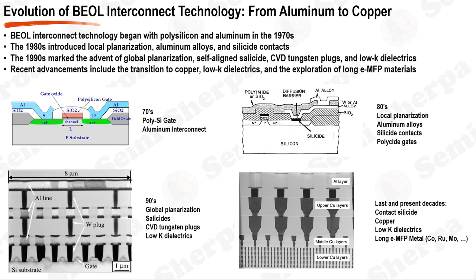Copper has lower resistivity than aluminum, allowing faster signal propagation and lower power consumption. Low-K dielectrics further reduce capacitive coupling, improving performance. As we venture into the future and grapple with challenges at 10 nanometers and beyond, escalating resistance in copper interconnects due to electron scattering becomes a significant hurdle. New materials such as molybdenum, ruthenium, and cobalt have been adopted as alternatives to copper for local interconnects, holding the potential to mitigate the resistance increase and sustain performance enhancement.